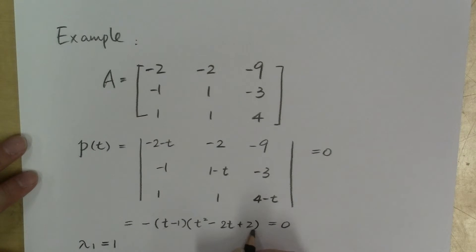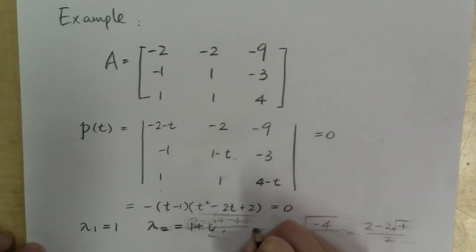So we have one real root, lambda sub 1 equals 1 because of this linear factor. And using the quadratic formula on this quadratic factor, we found a pair of complex eigenvalues. Lambda sub 2 is 1 plus i, and lambda sub 3 is 1 minus i.